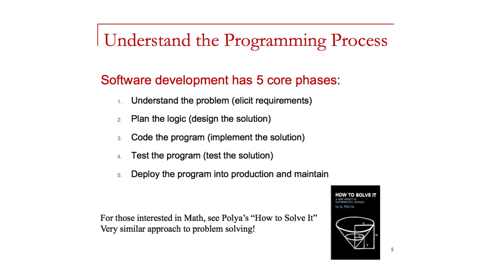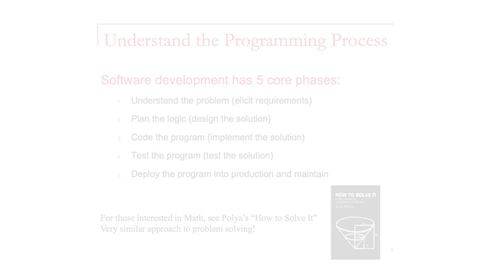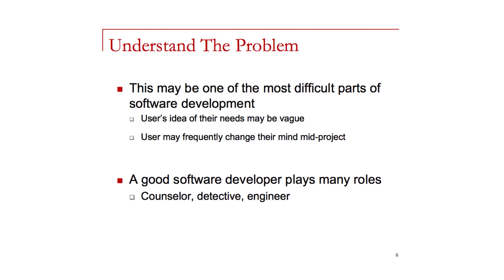The second phase is design — performing a design and considering the logic of the program before we actually get to coding. Coding is implementing the solution, and a lot of times students want to jump right to coding — we want to emphasize why that's not always the best idea. After we have the solution implemented, we want to test the program. Finally, we deploy the program by sending it to the user and we maintain it. These five steps actually parallel what George Polya talks about in his famous book, 'How to Solve It' — the same steps for solving mathematical problems appear in the generalized steps for writing software. Understanding the problem is perhaps one of the hardest parts of writing software.